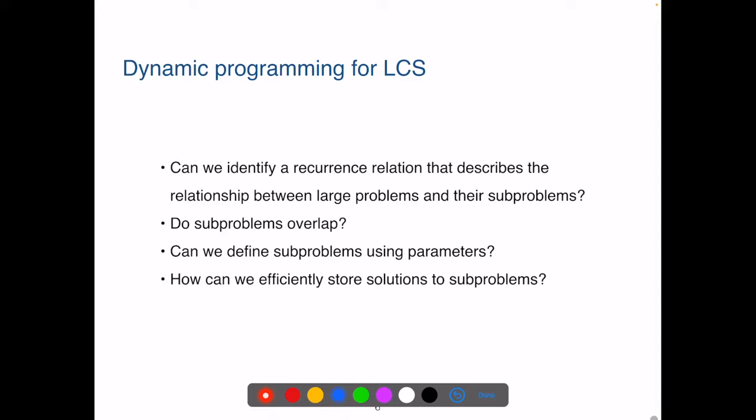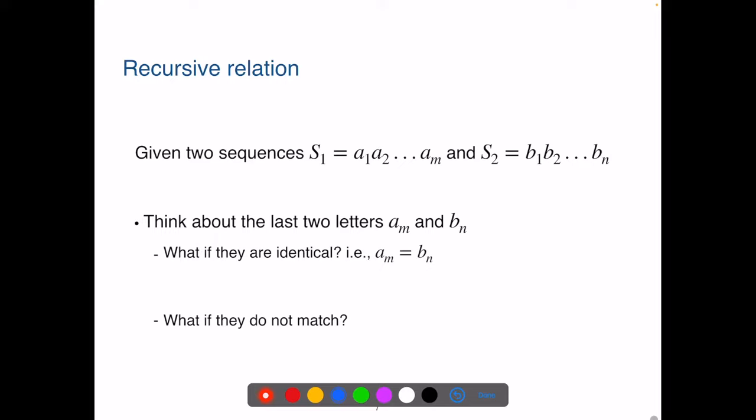First, can we identify a recurrence relation that describes the relationship between larger problems and their subproblems? Do subproblems overlap? Can we define subproblems using parameters? How can we efficiently store solutions to subproblems so we only solve them once? First, let's find the recurrence relation. Here is the thought process.